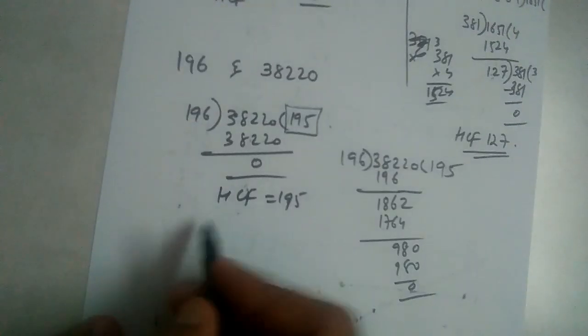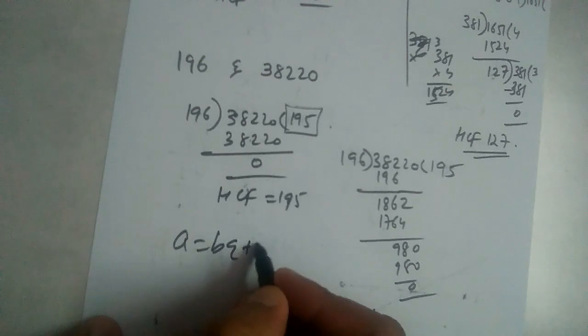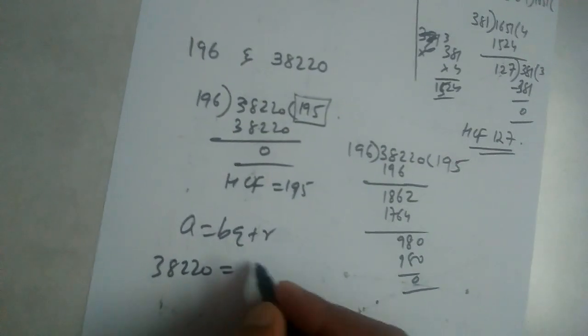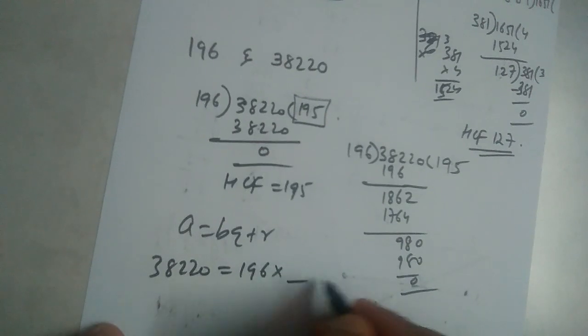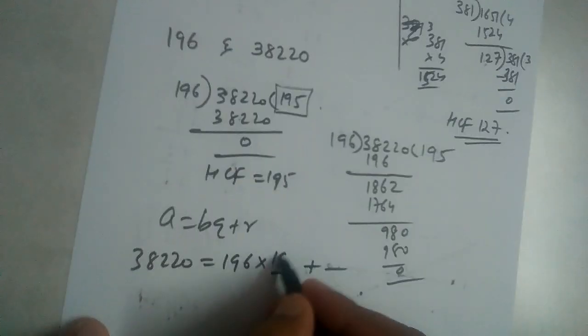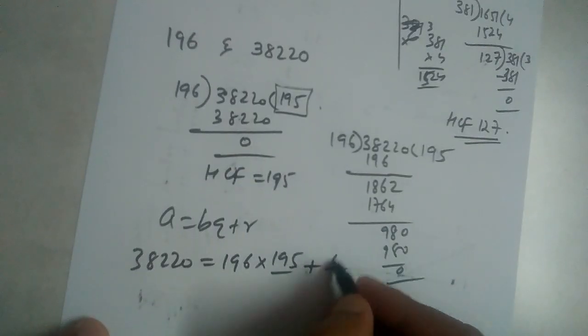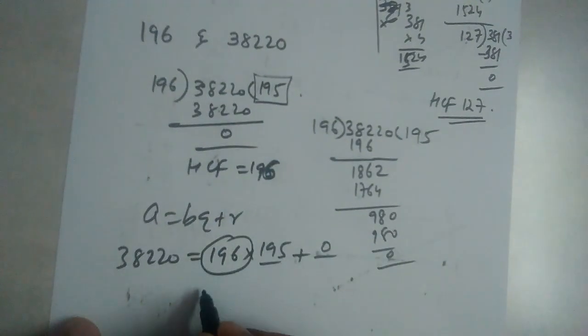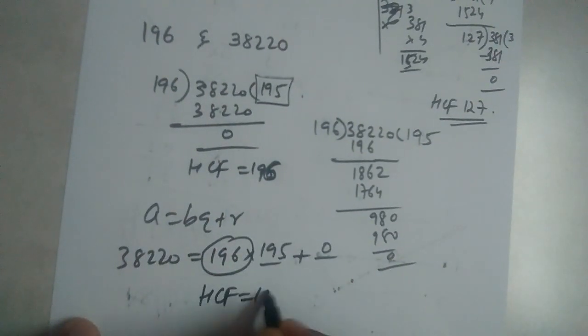195. Of course, you can use a is equal to bq plus r form also. A is 38220, b is 196 into quotient plus remainder. The quotient is 195 and the remainder is 0. All right. Sorry, HCF is 196. The value of b should be HCF. HCF is 196.